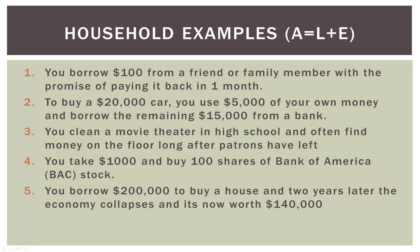Number five — and unfortunately this is all too common nowadays. Let's say you borrow $200,000 to buy a house, and two years later the economy collapses and your house is now worth $140,000. On the left-hand side you have a $140,000 house, but on the right-hand side you probably still have a liability or loan to the bank of maybe $190,000. That's when we start talking about balance sheet solvency.